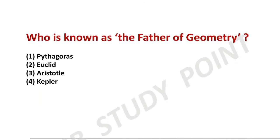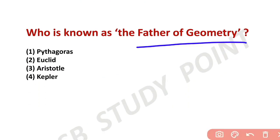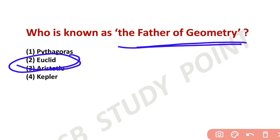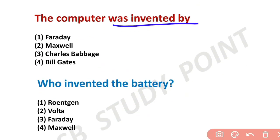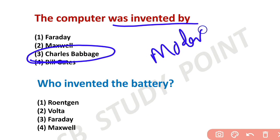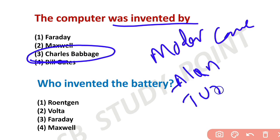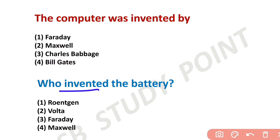Who is known as the Father of Geometry? In mathematics, the geometry chapter is very important for competitive exams. The answer is Euclid. Who is the Father of the Modern Computer? Alan Turing is the Father of the Modern Computer. The normal computer is associated with Charles Babbage.